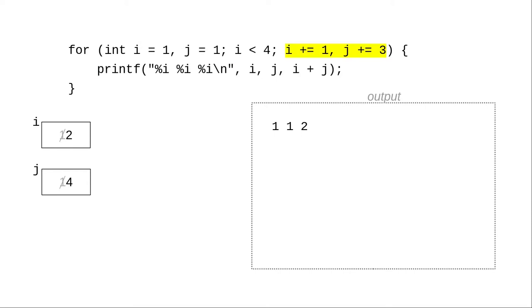The action after iteration adds 1 to i, making it 2, and 3 to j, which makes it 4.